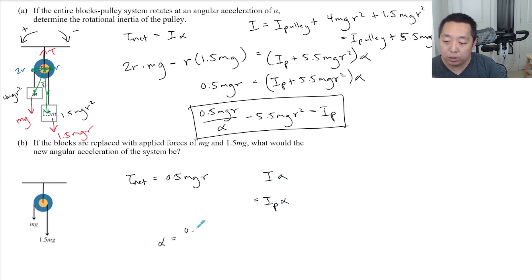So the alpha is equal to 0.5 MgR divided by the I of the pulley. But we found the I, so let's say that - let's call this I new, alpha new, sorry.